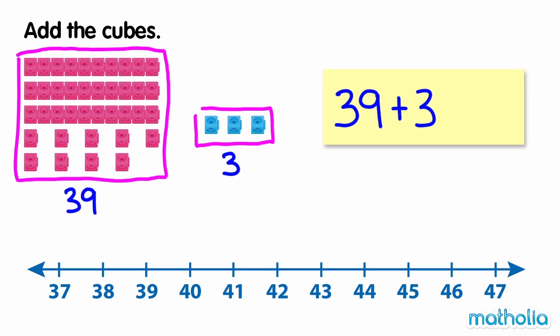We can add the numbers by starting at 39 and counting on 3 ones. 39, 40, 41, 42. 39 plus 3 equals 42. There are 42 cubes.